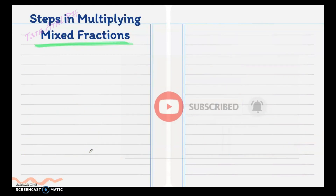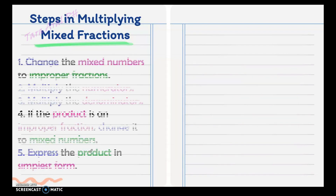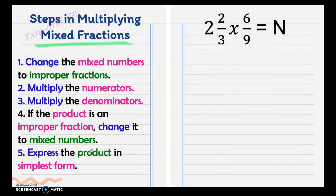Next, steps in multiplying mixed fractions. Mixed fractions are fractions that have a whole number and a fraction. Here are the steps: change the mixed numbers to improper fractions. When you change a mixed number to an improper fraction, multiply the denominator and the whole number, then add it to the numerator, then copy the denominator. So we have 3 times 2 is 6, plus 2 is 8, then copy the denominator which is 3.